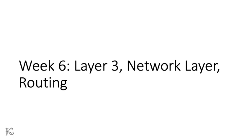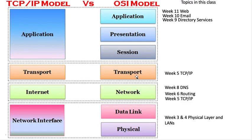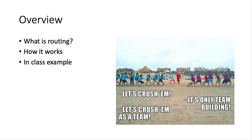Let's talk about routing. This is about taking our IP packets that exist at layer three and moving them through network devices called routers. In terms of the OSI model, this is at the third layer where we have routing. We want to cover what it is and how it works. We already did an example in class, so we won't be doing that in this video, but hopefully what we did in class will reinforce what I'm about to talk about.